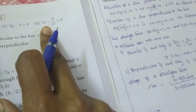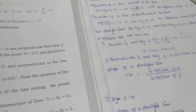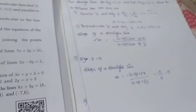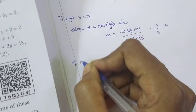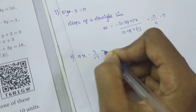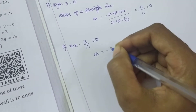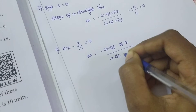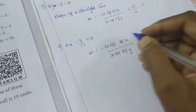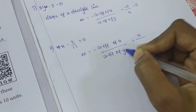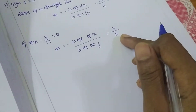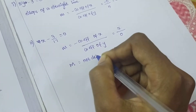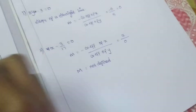Second question: 7x minus 3/17 equal to 0. Using the same formula, m equals minus coefficient of x divided by coefficient of y. The coefficient of x is 7; there is no y term so the coefficient of y is 0. Anything divided by 0 is infinity, so m is not defined.